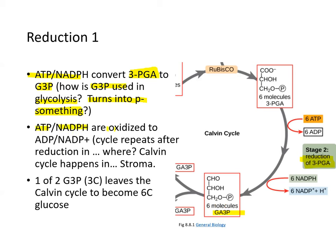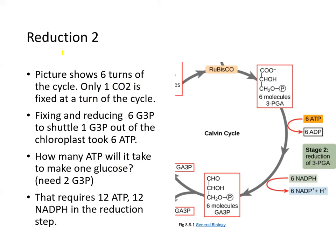ATP and NADPH are oxidized to ADP and NADP+, and the cycle repeats after reduction in the Calvin cycle in the stroma. One of two G3Ps leaves the Calvin cycle to eventually become six-carbon glucose. This picture really shows six turns of the cycle combined, but only one carbon is fixed at each cycle. Fixing and reducing six G3Ps to shuttle one G3P out of the chloroplast takes six ATP molecules.